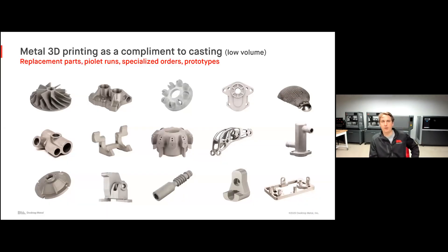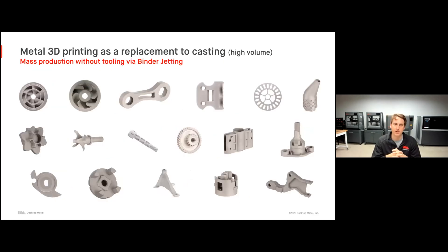When we're talking about metal 3D printing as a complement to casting, we're more talking about lower volumes, things like replacement parts, pilot runs, maybe some specialized orders where you need to have a new geometry, even things like prototyping, but now we're doing it in metal. We'll look at a few examples of this and explain how metal 3D printing can add value when you're talking about lower volumes, when you're complementing casting. Then we'll talk briefly about metal 3D printing as a replacement to casting. Here we're talking about higher volumes, we're talking about mass production, but of course without the need for any tooling.